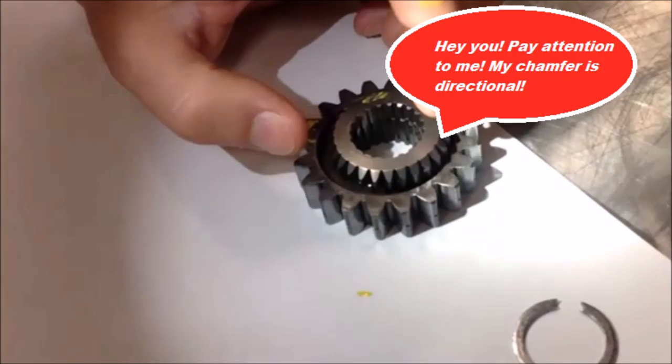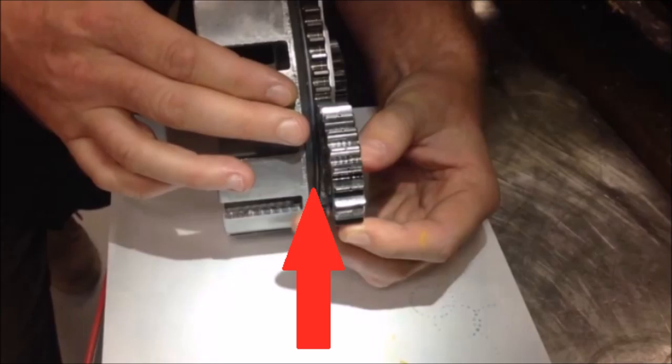Let's think about this for a second. That chamfered edge is directional. You got to ask yourself why. Check this out: you need clearance by that red arrow there. We need clearance in there when those two pieces are assembled.